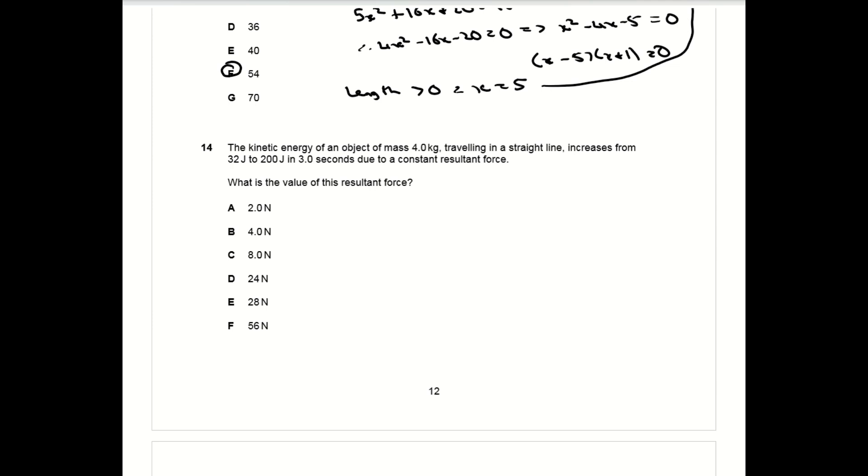Question 14 is pretty much a multi-step kinematics question. You're given the change in kinetic energy and using the mass you can work out the original velocity, which is four meters per second, and then the final velocity after the action of the force, which is 10 meters per second. You're also given the time over which that velocity changes, so you can use a equals v minus u over t to work out the acceleration, and then Newton's second law F equals ma to work out the value of the force.